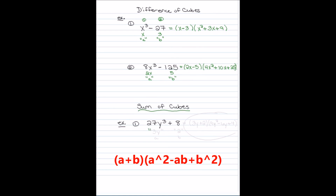The sum of cubes works the same way with its own formula: a³ + b³ = (a + b)(a² − ab + b²). For the example, the cube root of the first term is 3y and the cube root of the last term is 2, so it's (3y + 2)(9y² − 6y + 4). That's 10 minutes of factoring — I showed you how to do it from my car! Feel free to watch this over and over again; you really want to know how to factor before going into college algebra.